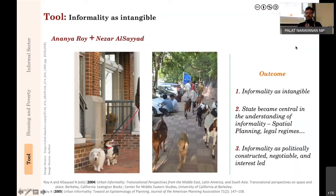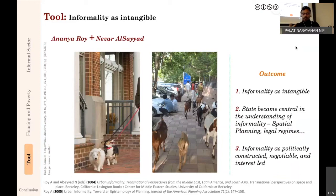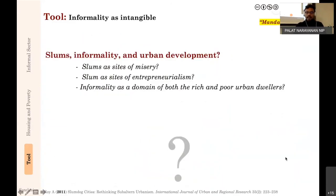To summarize this third strand: the most important point is that informality, as conceptualized by Roy, AlSayyad, and many others subsequently, is politically constructed. This relates to the previous class discussion on why the dog photograph looks okay but the goat photograph looks undisciplined—because it is politically constructed. It is also negotiable—what is informal today changes over time—and it is interest-led: there is always an interest in how we conceptualize informality.